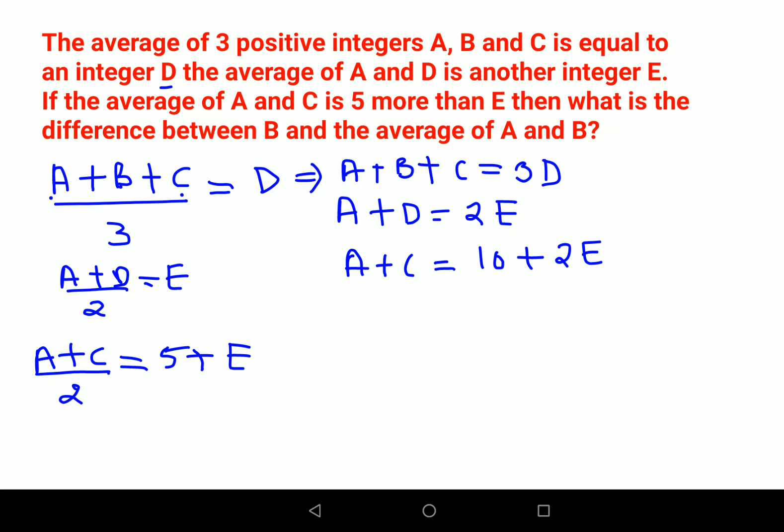We need to find the difference between D and the average of A and B, which is D - (A+B)/2. From these statements, the value of 2E can be written as A+D. So I can write A+C = 10 + A + D.